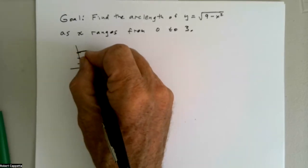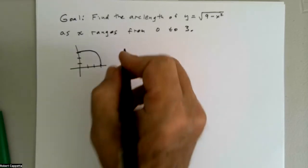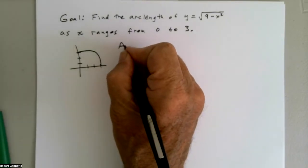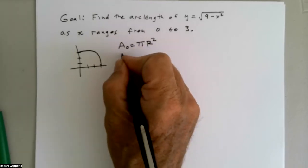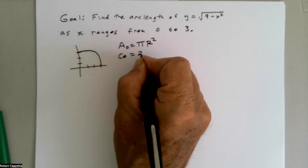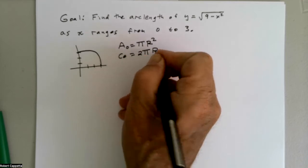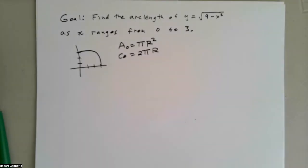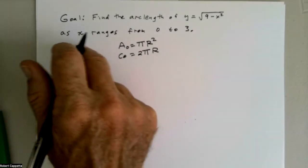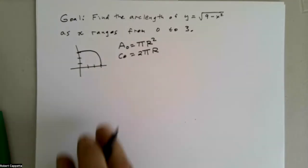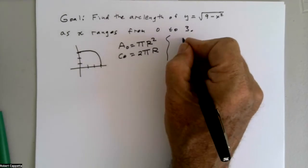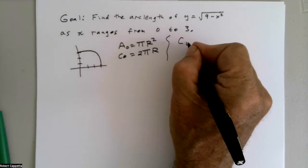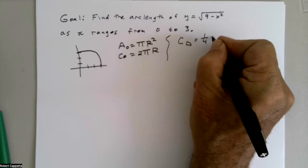This is a quarter circle. We know the area of an entire circle is πr², and the circumference of an entire circle is 2πr. For arc length, the circumference formula is what's relevant. Since I have a quarter circle, its circumference would be one-fourth of 2πr.